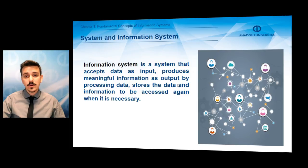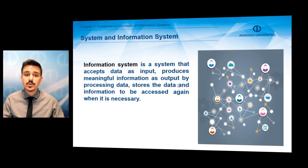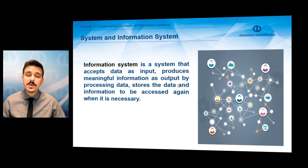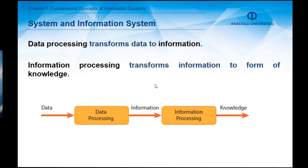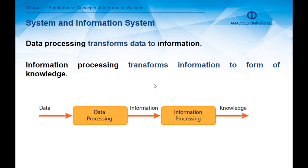An information system, on the other hand, is a system that accepts data as input, processes the data, and produces meaningful information as output. It stores data and information to be accessed again when necessary. The fundamental goal of an information system is transforming data into information — called data processing — or transforming information into knowledge, which is called information processing.